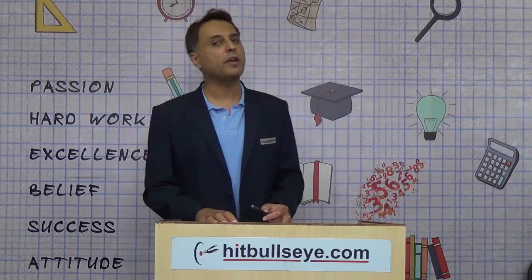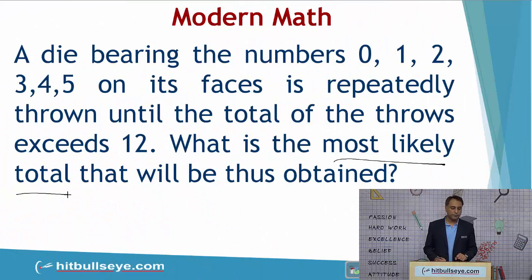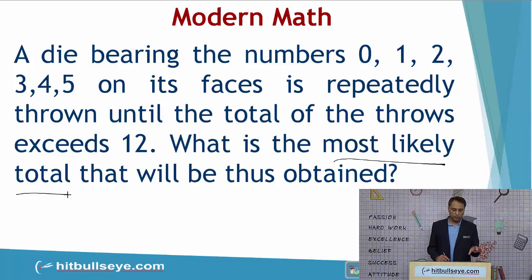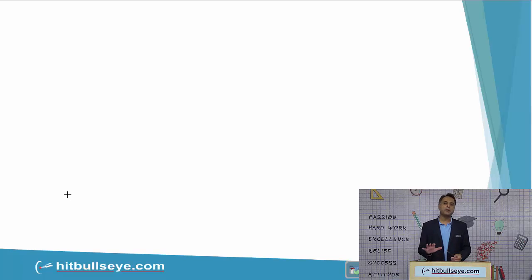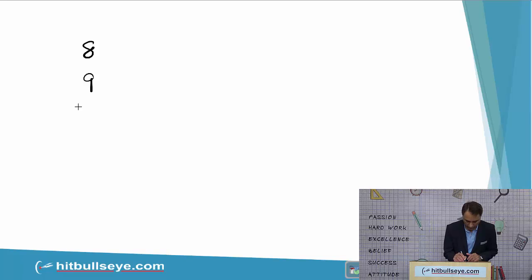My advice is: don't be judgmental on these issues. Explore the question in some detail at least before deciding whether to proceed or not. If you read the question carefully, it asks for the most probable total obtained, and you analyze it by looking at the penultimate throw — the throw before the last throw. On the last throw you cross 12, so on the penultimate throw your total would be at 8, 9, 10, 11, or 12.